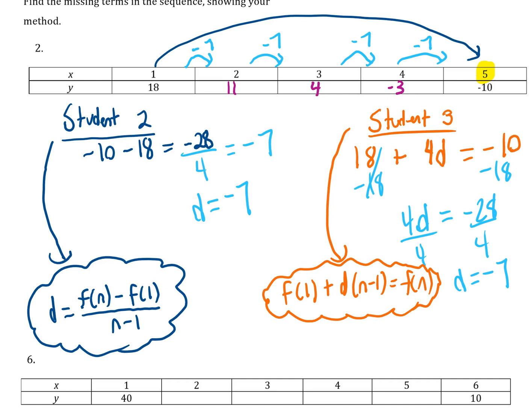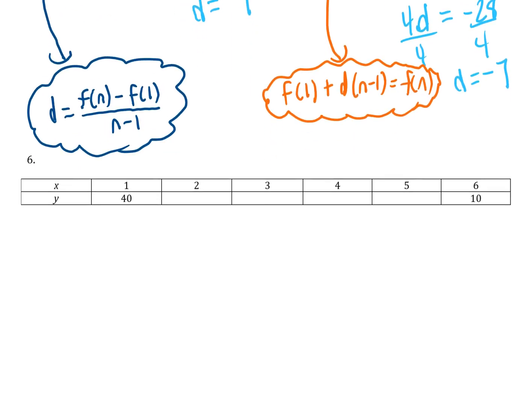For problem 6, if I use student 2's formula, the blue formula, f(n) is 10 minus 40 divided by 6 minus 1, which is 5. So that's negative 30 divided by 5, which tells me the difference is negative 6.